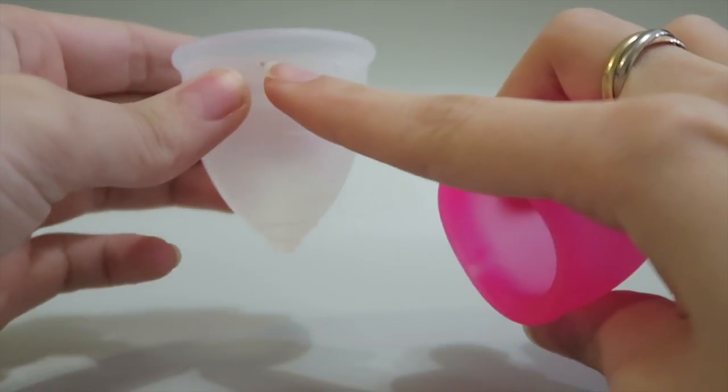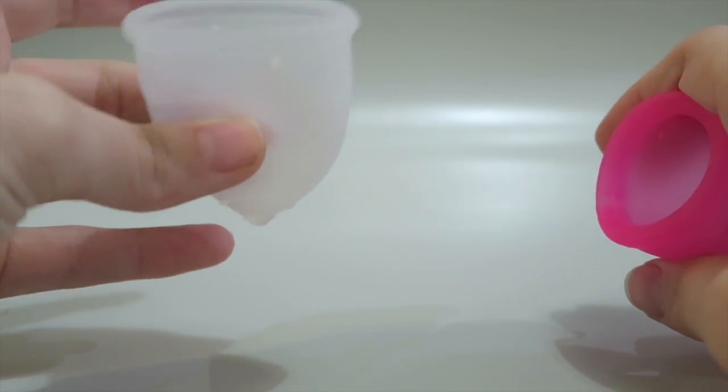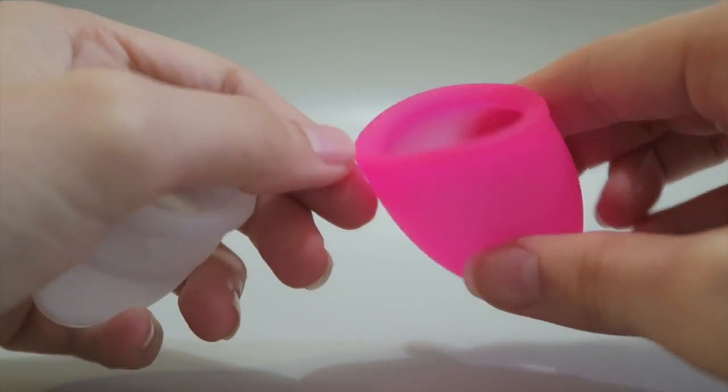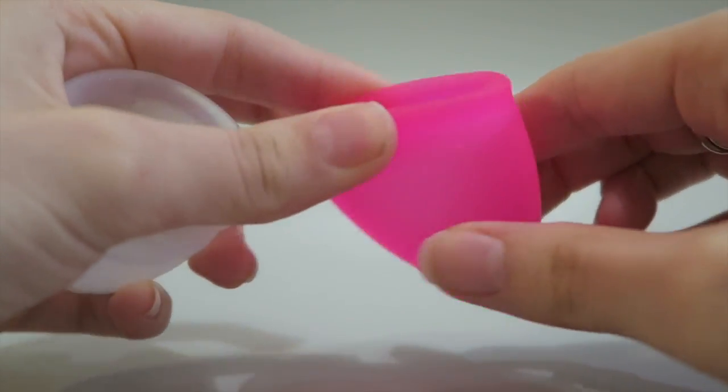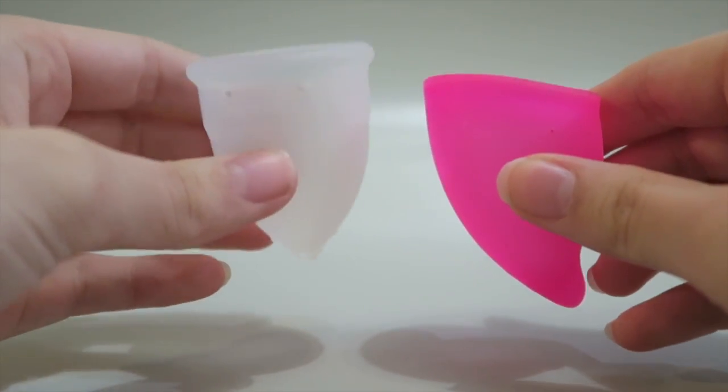The Organic Cup has a thicker rim at the top here, so this bit is slightly firmer than down here. And with the Fun Cup it's slightly firmer at the top here and the rest of it is softer. And this system works well actually, both these cups worked really well.